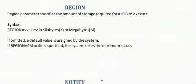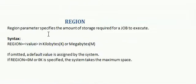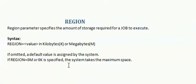The REGION parameter is used to specify the amount of storage required for a job for execution. The syntax is REGION equal to a value, which can be in the quantity of kilobytes or megabytes. If this parameter is omitted, the default value is assigned by the system. If REGION equal to 0M or 0K is specified, then the system will take the maximum region space.